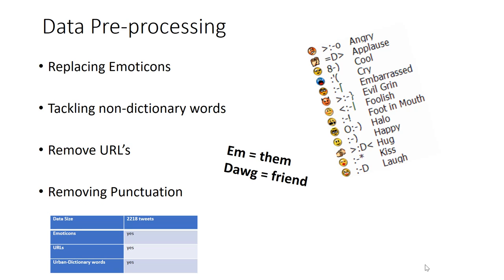Now coming to the data preprocessing part. Our data contains emoticons, non-dictionary words, URLs, and punctuation signs. Now in the case of emoticons, there are collections of symbols which correspond to their meaning in English. For example, in this image, this collection of symbols refers to angry, cool, cry, happy, hug. So we will replace all these symbols with their English meaning.